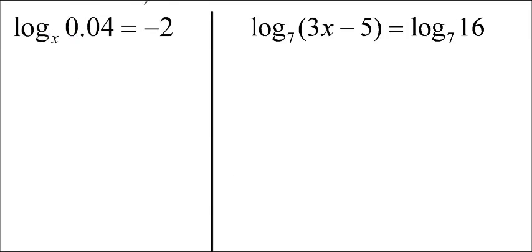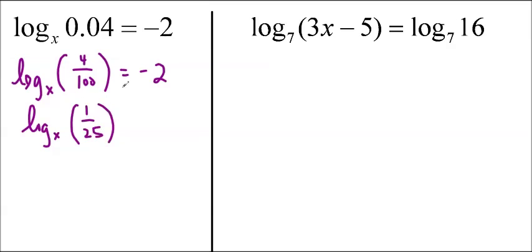So log base x of 0.04 is equal to negative 2. So 0.04 is not a very convenient number, but if I put it into fractions, I know it's log base x of 4 over 100 equals negative 2. I know 4 over 100 is 1 over 25. So you can see I'm just messing around with this fraction a little bit. And now I'm not really sure what to do, so I am going to go into exponential form. When in doubt, change forms.